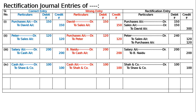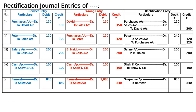Case (e): Ramesh's account was credited with 840 twice instead of once. It should have been credited once — once is correct, but it was credited twice by mistake. The correct entry should be purchases to Ramesh, 840. But the wrong entry shows cash to Ramesh 840 and 1650 credited in Ramesh. Hence: Ramesh debited to suspense, 840 and 840.